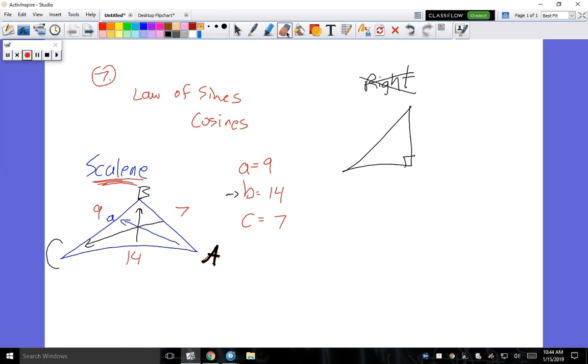So it also gave us those values on number 7, that B was 14, and C was 7. So with that, we're going to say that opposite from 14, way over here, is big B, and opposite from 7 is going to be capital C.